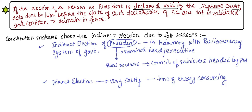There are different reasons given by the constitution makers for choosing indirect election of the President. The first reason is that the President is just the nominal head or nominal executive — real powers are given to the Council of Ministers headed by the Prime Minister. The second reason is that direct election is very costly, time-consuming, and energy-consuming, so indirect election makes the process easier and simplified.